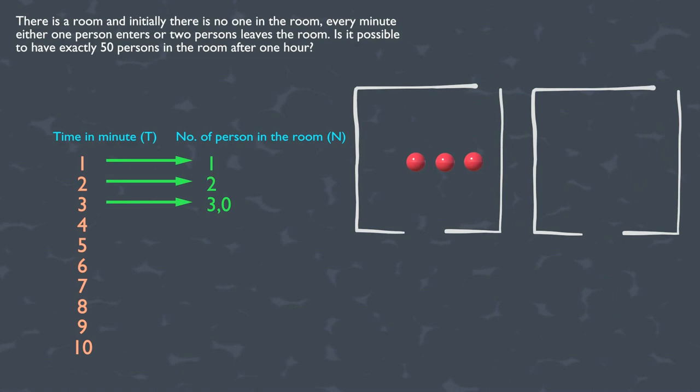After four minutes, we have two branches. The first branch will give us only one option, which allows us to enter only one person. And the second branch gives us two options. Either one person can enter or two persons can leave the room. So after four minutes, the possible states of the room can be one or four persons.